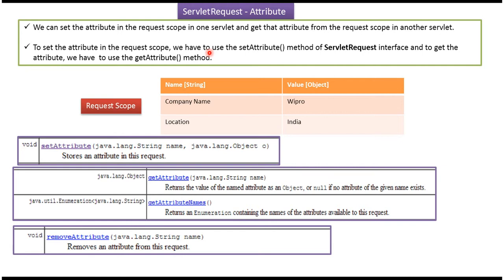If you want to set an attribute, we can use the request object's setAttribute method — you have to pass the name and the value. If you want to remove an attribute from the request scope, we can use the removeAttribute method — you have to pass the name of the attribute.